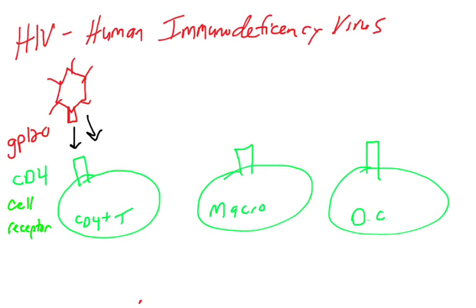Interestingly, CD4 protein is not just found on CD4 helper T cells. It's actually also found on the surface of macrophages and on the surface of dendritic cells. We're just talking about the fact that CD4 protein is actually present on the surface of different immune cells, specifically macrophages, dendritic cells, and CD4 cells. That means HIV can infect and enter all of these cell types.